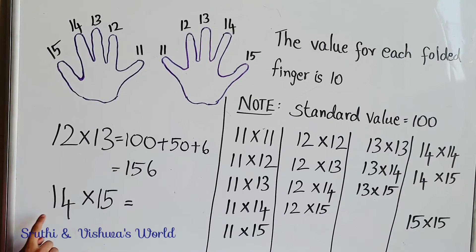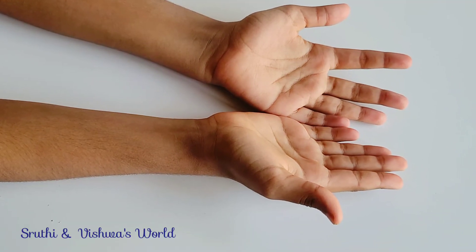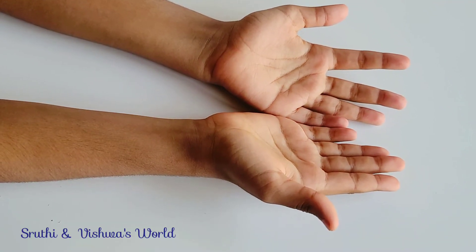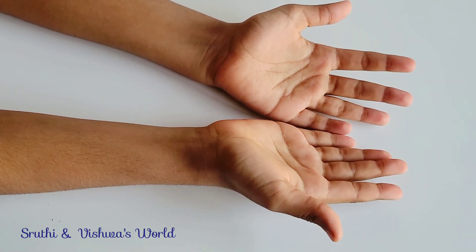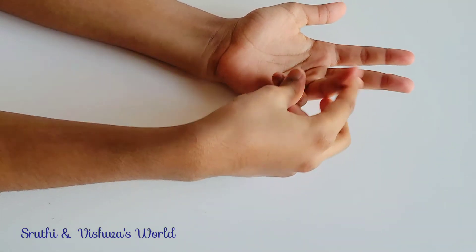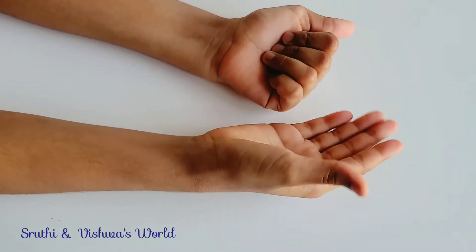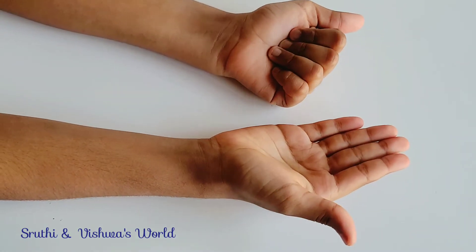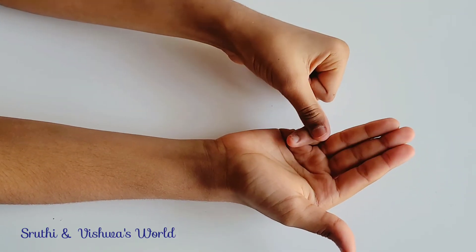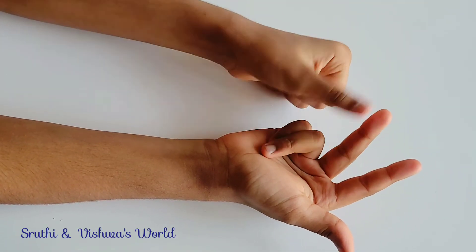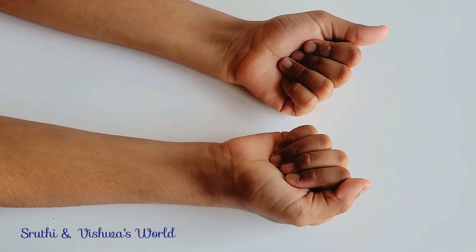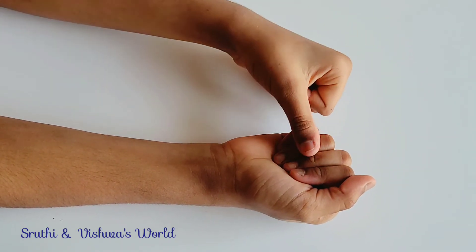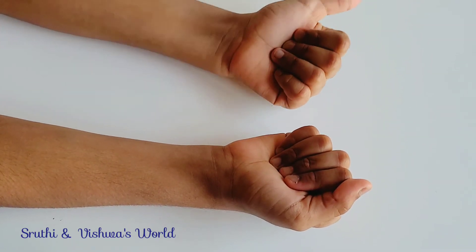Let's try 14 times 15. Keep 100 in your mind. For 14 we fold fingers 11, 12, 13, 14. Now for 15 we fold 11, 12, 13, 14, 15. As you can see, all the fingers on this hand are folded.